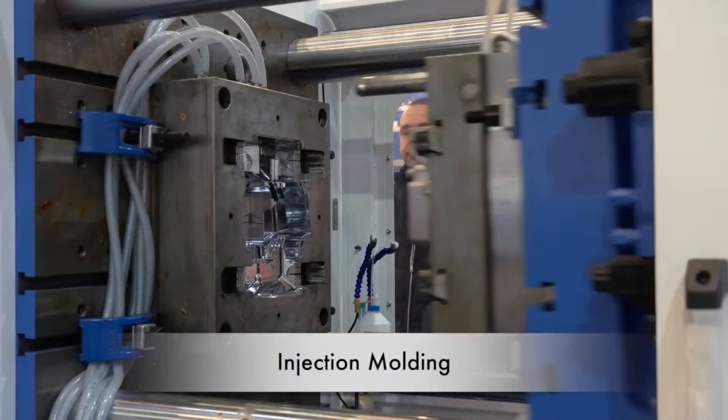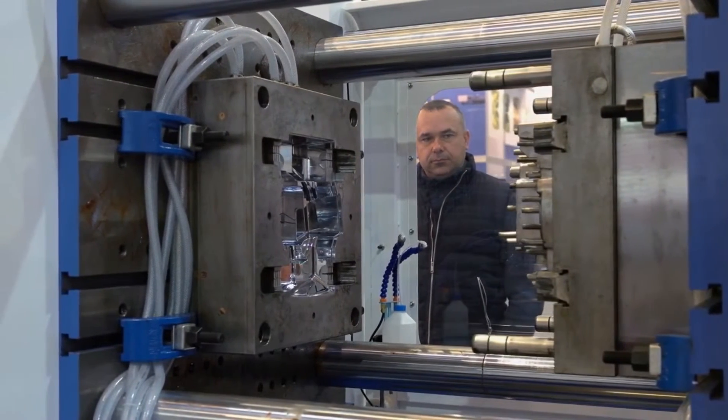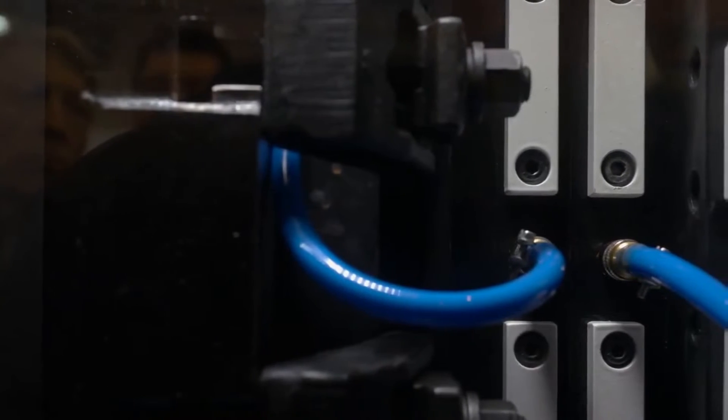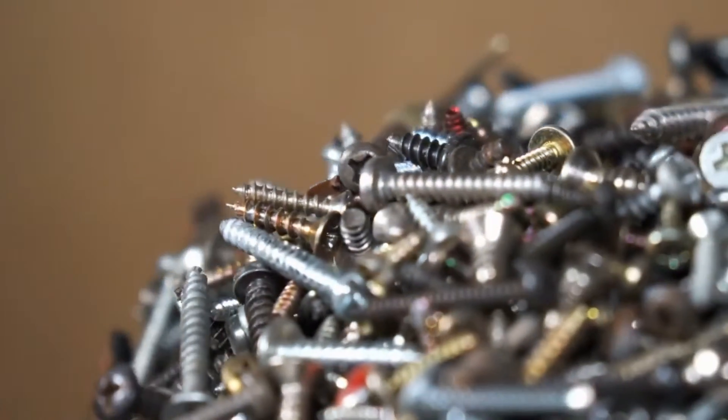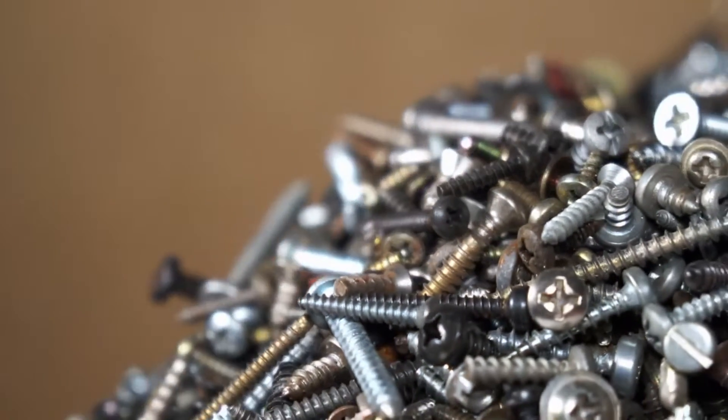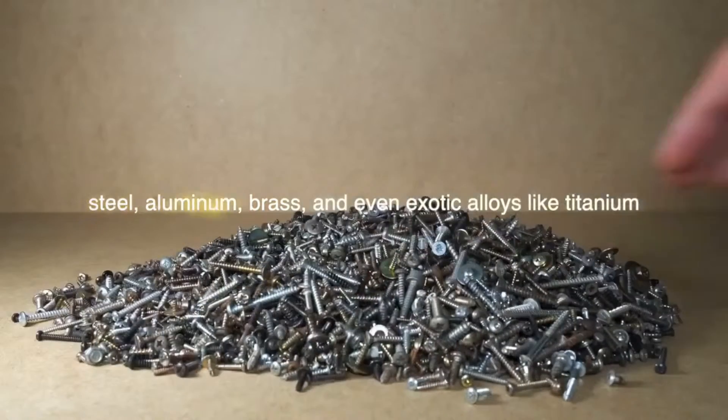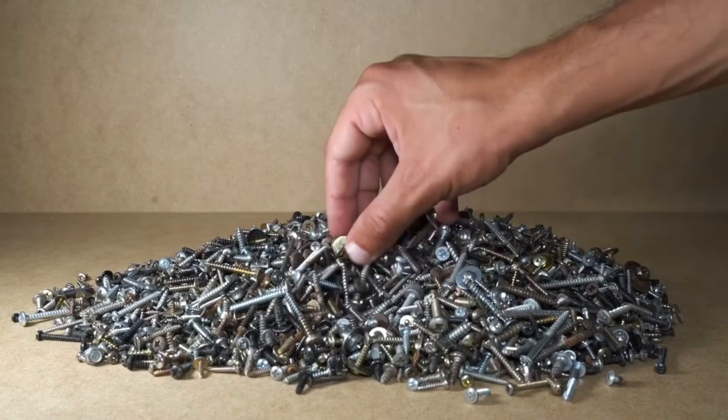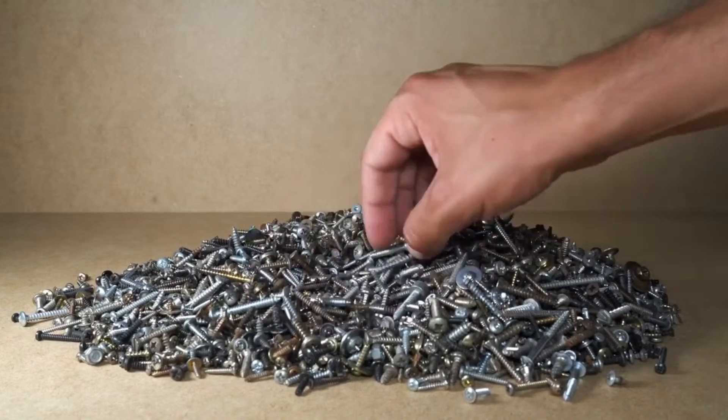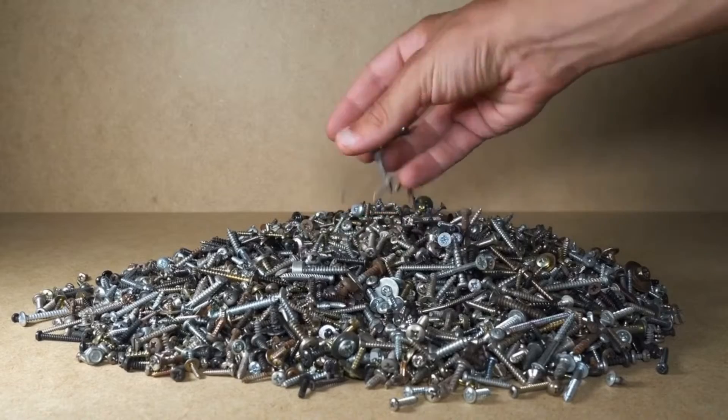Injection molding, a process commonly employed for plastic screws, entails injecting molten plastic into a mold cavity, where it solidifies to form the desired screw shape. Screws can be crafted from a diverse array of materials, including steel, aluminum, brass, and even exotic alloys like titanium. Each material offers unique properties such as strength, corrosion resistance, and conductivity, making it suitable for a wide range of applications.